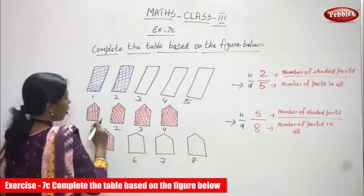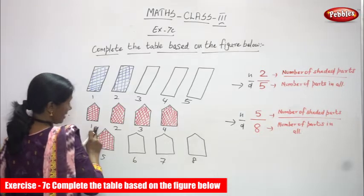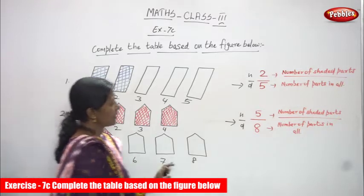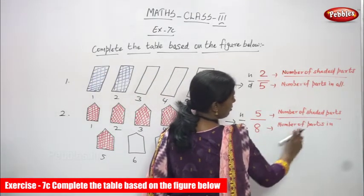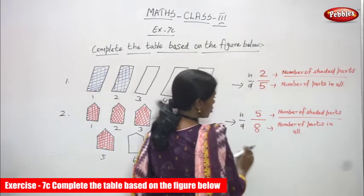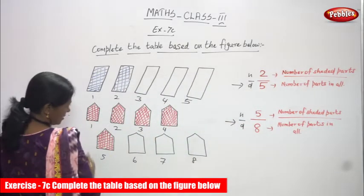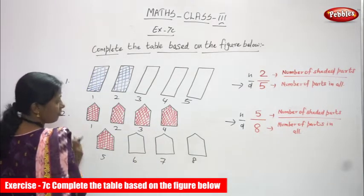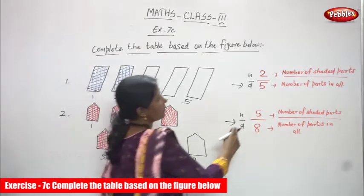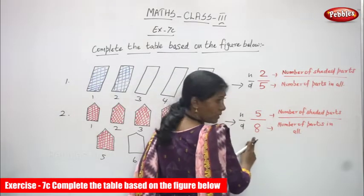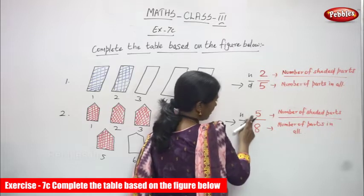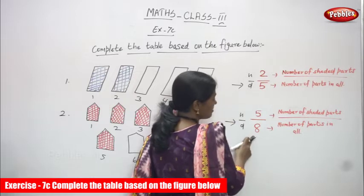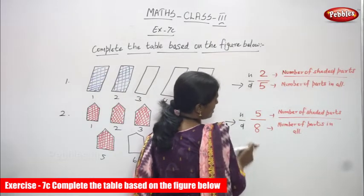But how many shapes have I shaded? Only 5 shapes — 1, 2, 3, 4, 5. So, 5 is the number of shaded parts and 8 is the number of parts in all, that is the total number of parts. So, 5 is the numerator and 8 is the denominator. Top number is numerator and bottom number is denominator. So, fraction is 5 by 8.